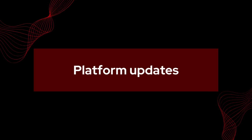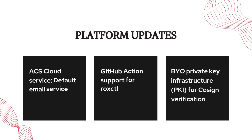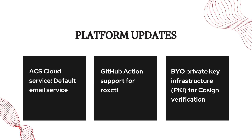On to our platform updates. We want to discuss three significant updates to the platform. First, ACS Cloud Service now includes a default email service for faster onboarding. Second, we added a GitHub Action to install the roxctl CLI as part of your CI/CD process. You can find it in the GitHub Marketplace alongside the central login action that we published earlier this year — simply search for StackRox in the GitHub Marketplace. Lastly, ACS 4.5 has added support for verifying cosign signatures backed by an organization's existing public key infrastructure.